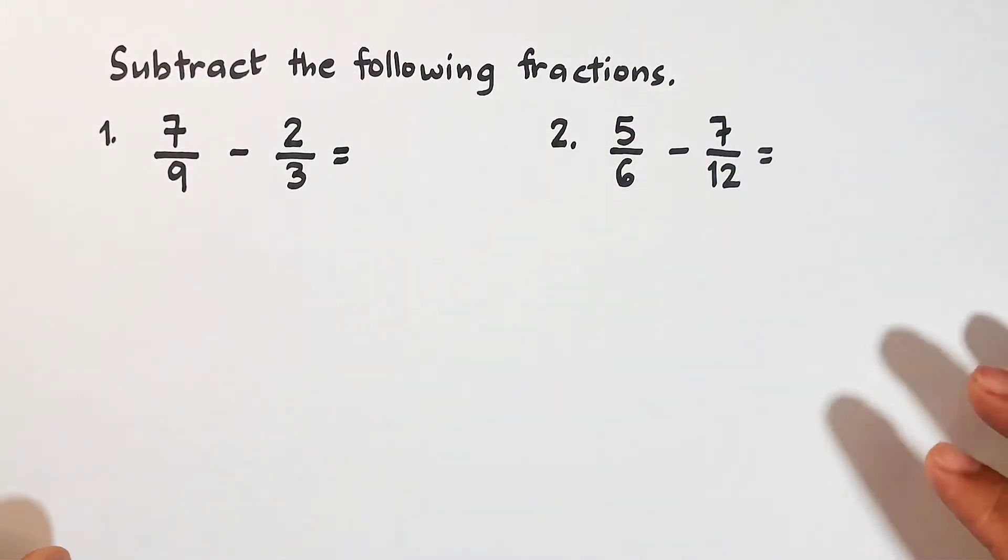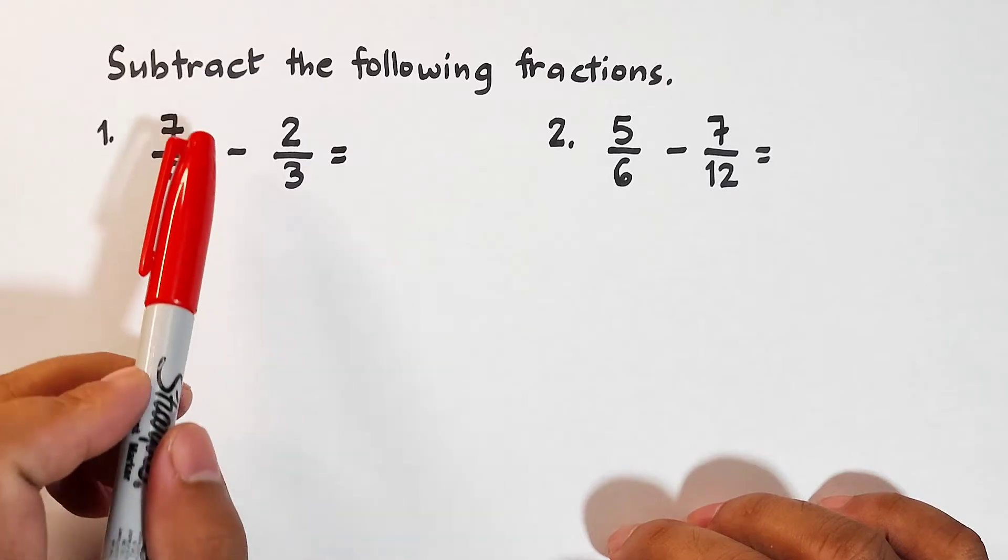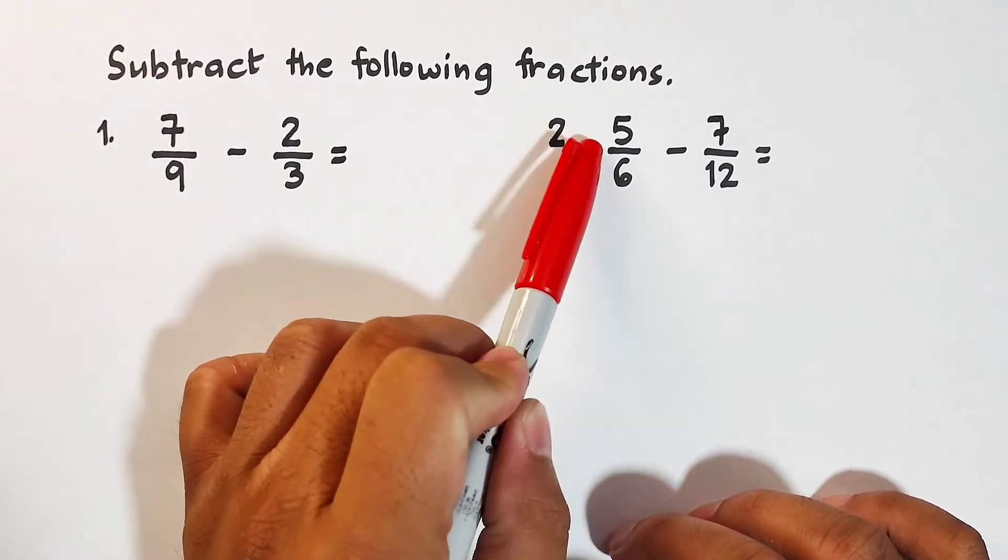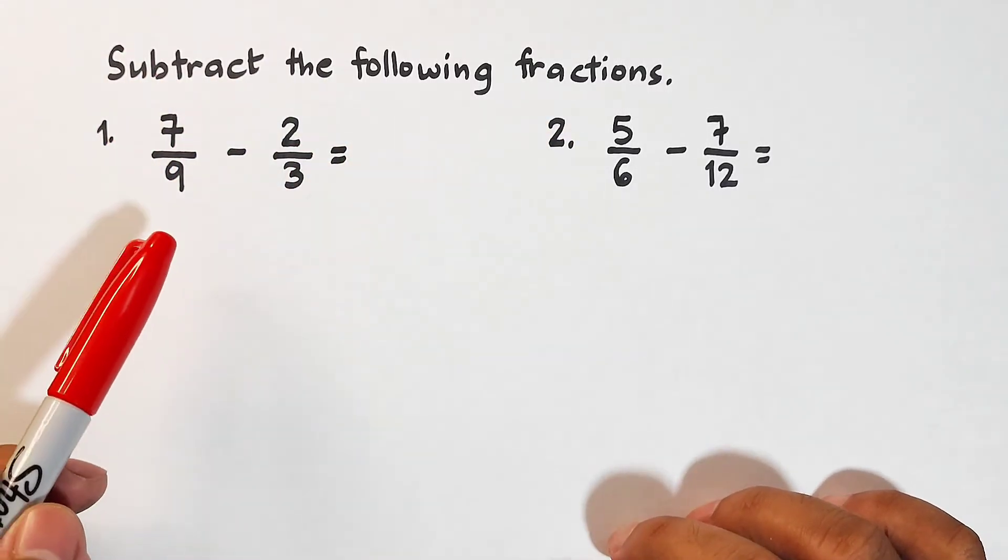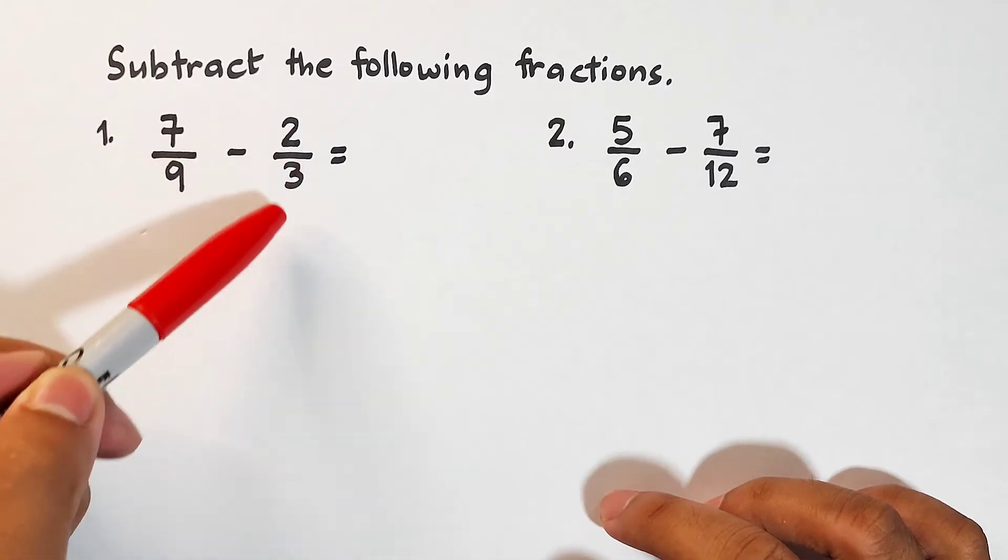What we have here are fractions with different denominators, and we are asked here to subtract the following fractions. Number one, we are given 7 over 9 minus 2 thirds.